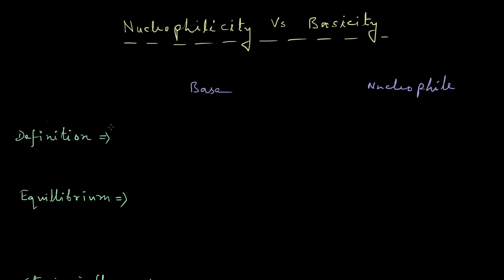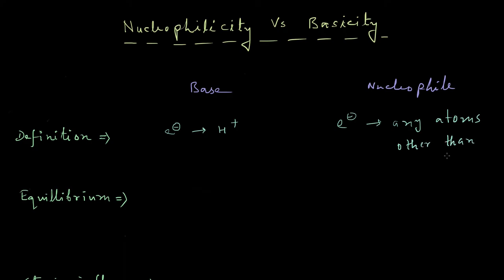First is the definition. By definition, a base is a species which donates its electron pair to a proton, compared to a nucleophile which donates its electron pair to any atom other than a proton. So a base can only donate electron pairs to protons, but a nucleophile can only donate its electron pair toward atoms other than the proton.